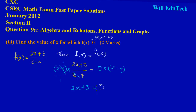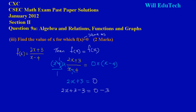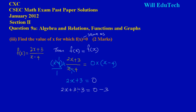If you notice what is happening, you have 2x plus 3 is equal to 0. So we need to move the 3. The 3 is positive, so we have to do the opposite of addition, which is subtraction. So subtracting 3 from both sides — positive 3 minus 3 cancels out — leaving us with 2x is equal to negative 3.